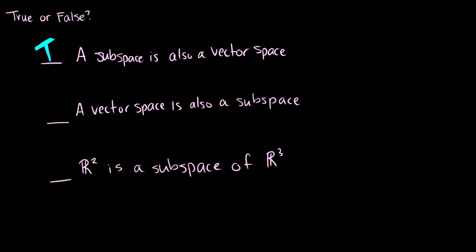Question 2: A vector space is also a subspace. This is also true. Every vector space is a subspace of itself — just like in set theory, where A is a subset of A. So G is a subspace of G; they satisfy the same criteria, so a vector space is a subspace of itself.